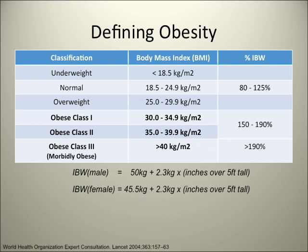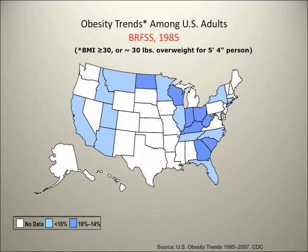This is the formula to calculate the ideal body weight for male and female that we all know about. We use 30 kg per meter squared to define obesity because the CDC, when they did their survey from 1985 to 2007, showed a picture of the whole country. In 1985, only about 7 to 8 states had about 10 to 14% of their population with a BMI more than 30.